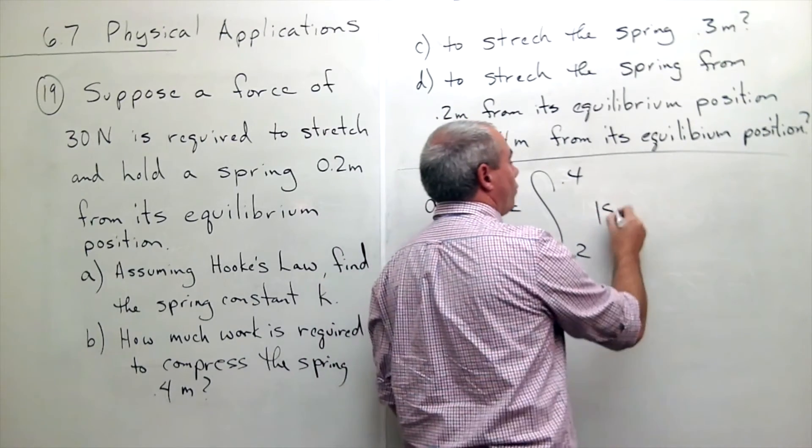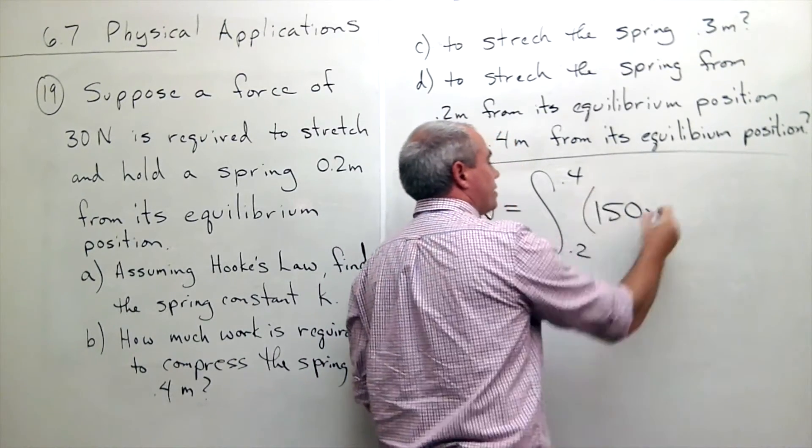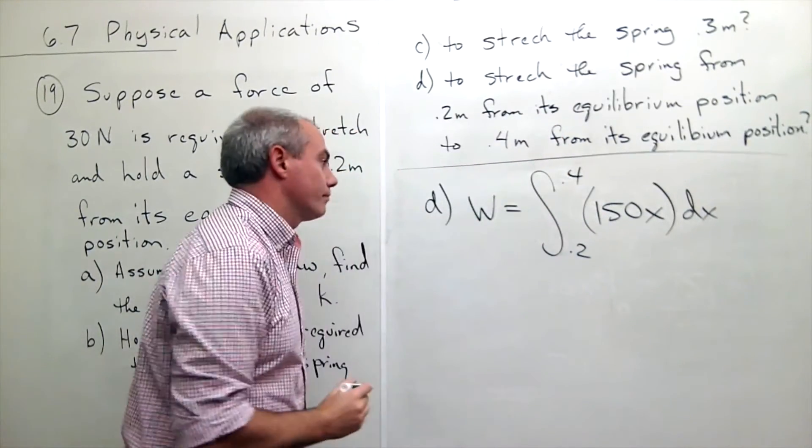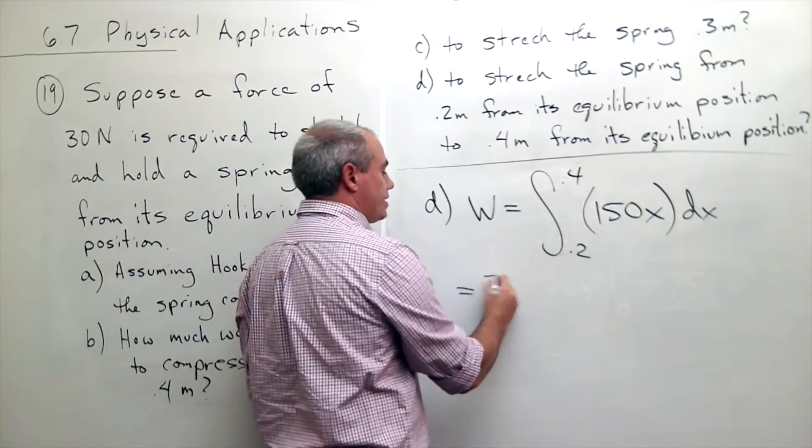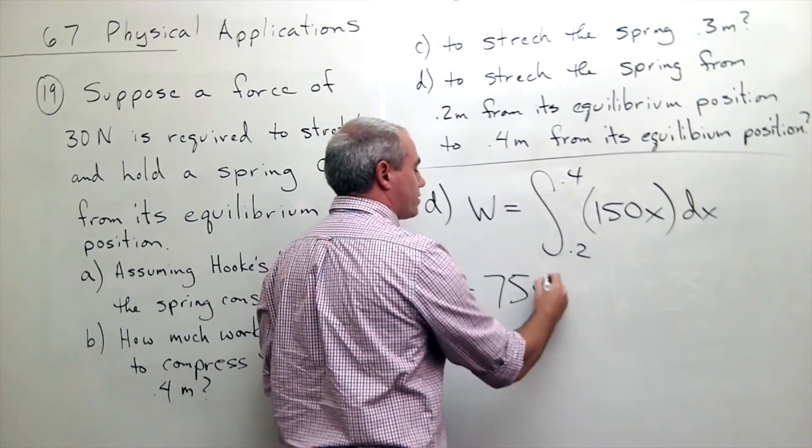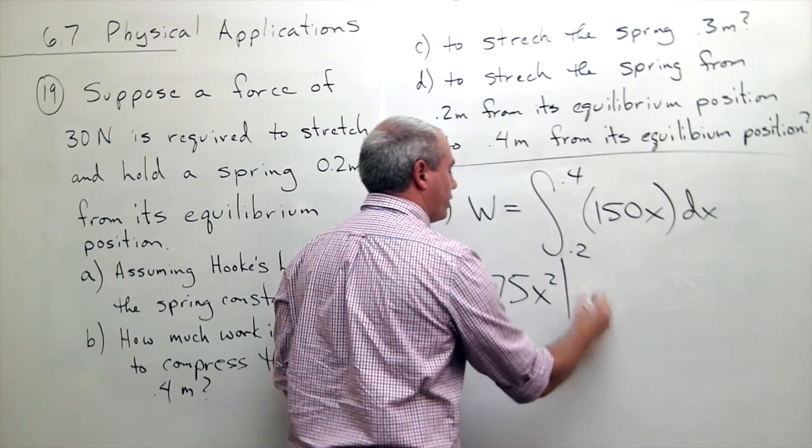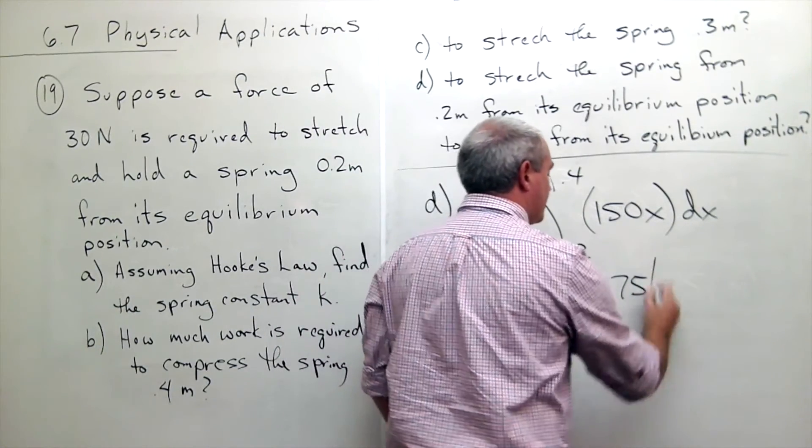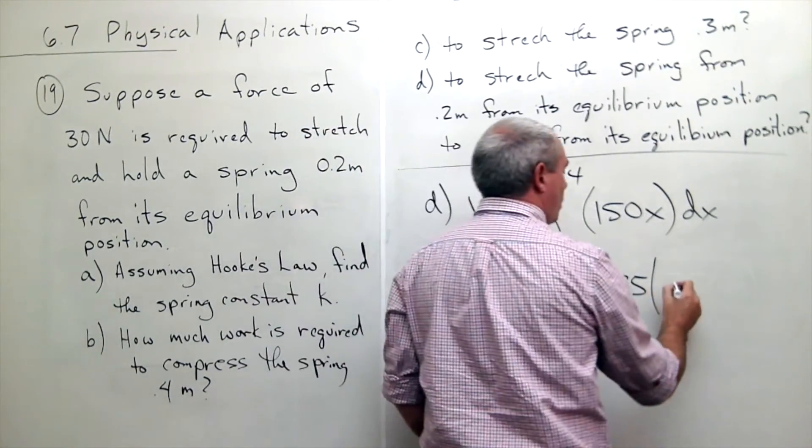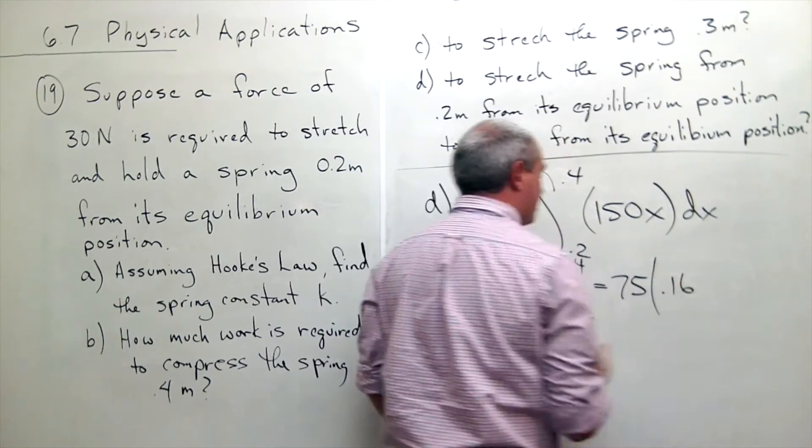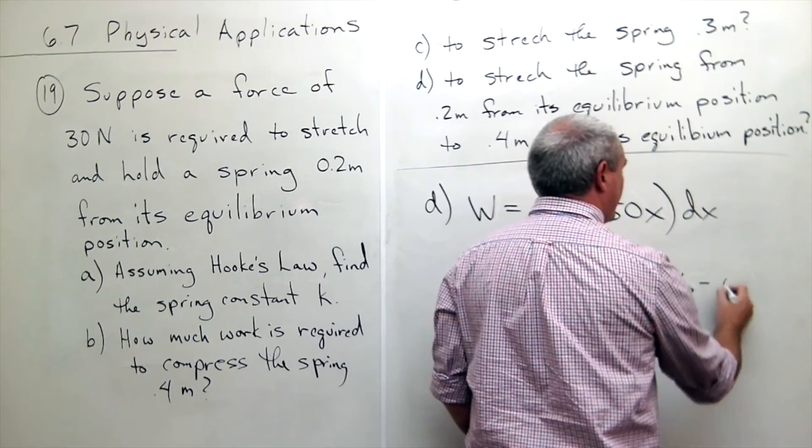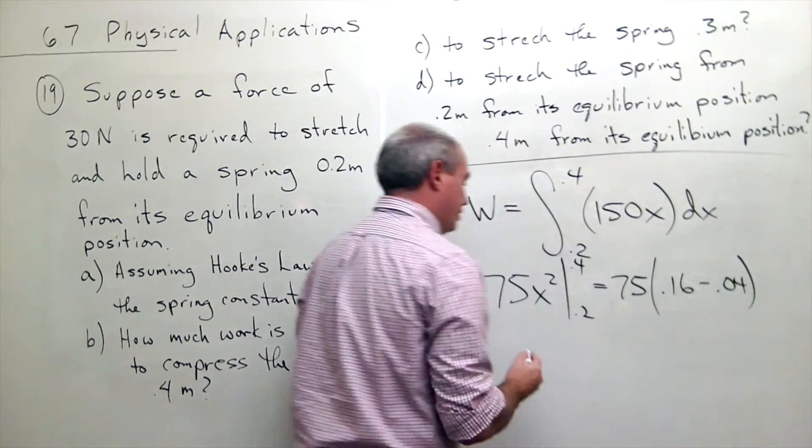And that's, the force function is still 150 times X DX. Take the antiderivative, we still get 75 X squared evaluated from 0.2 to 0.4, which is 75 times, if I plug in 0.4 I get 0.16, and if I plug in 0.2 I get minus 0.04.